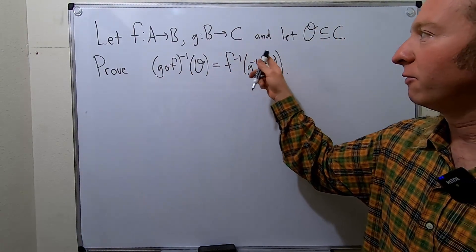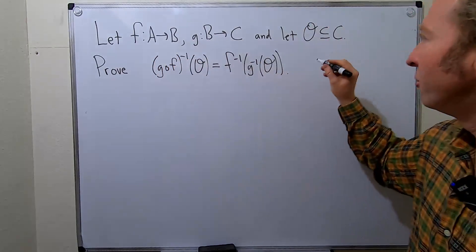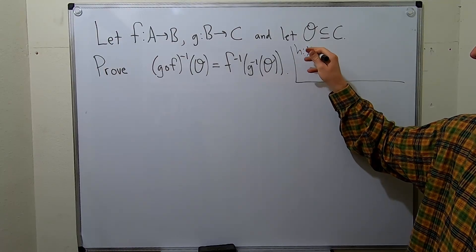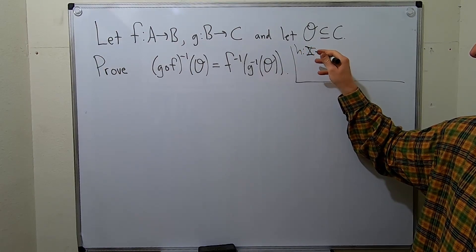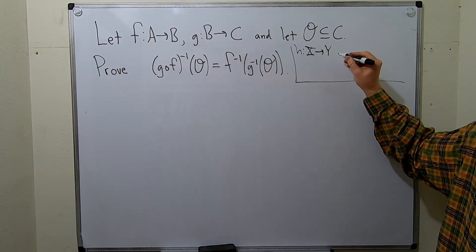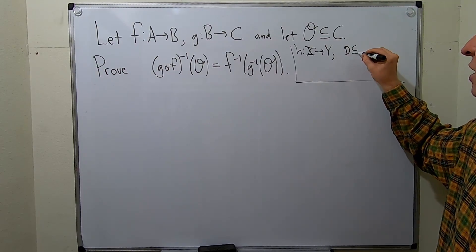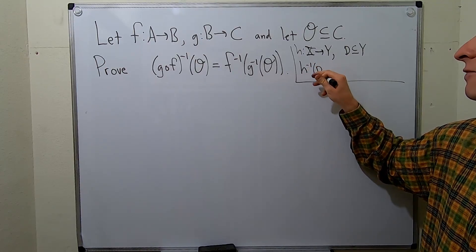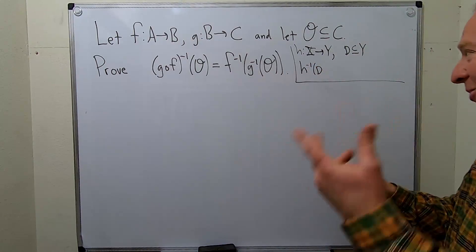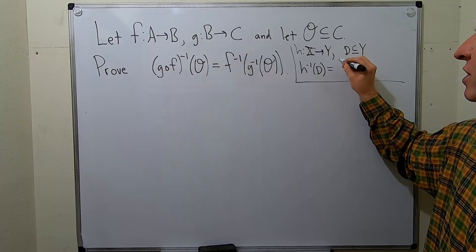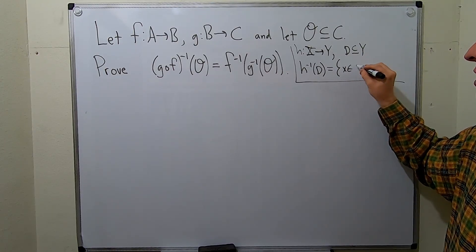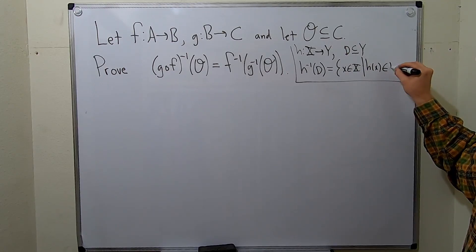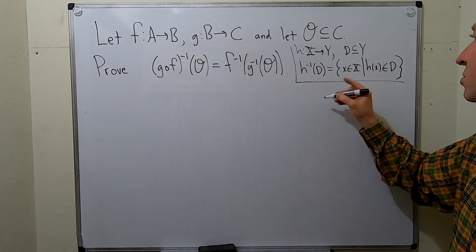So let me recall what this symbol means. So if you have a function H from capital X to capital Y, and you take a subset D contained in Y, the inverse image of D under H would be equal to the set of all elements in capital X such that H of X is an element of D. So this would be the definition. So we're going to use this extensively.